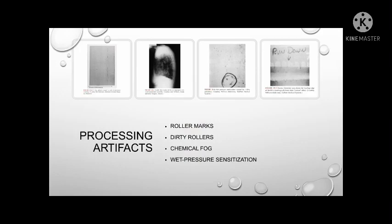Another category is processing artifacts. Most are pressure-type artifacts caused by the transport system of an automatic processor. Pressure-type artifacts usually sensitize the emulsion and appear as higher optical density. A scraped or removed emulsion due to lack of developer hardener may appear as lower optical density. First among processing artifacts are roller marks. In an automatic processor, the transport system uses rollers through which the film travels to different processing tanks.